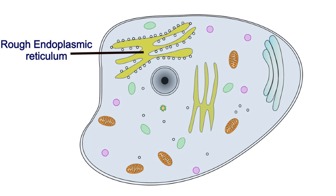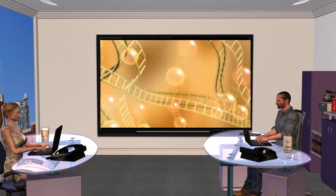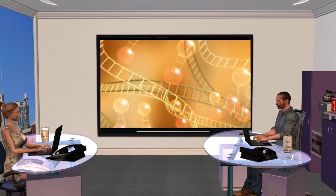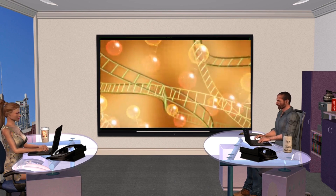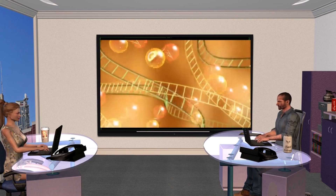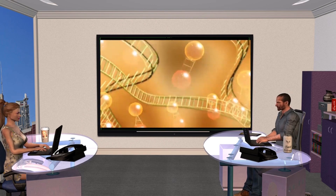Next, we move slightly away from the nucleus into the rough endoplasmic reticulum, which is the council building in this city. The ribosomes are the council workers in this building and carry out instructions sent by the mayor. In reality, this means the nucleus sends mRNA to the ribosomes, which make the complementary proteins.